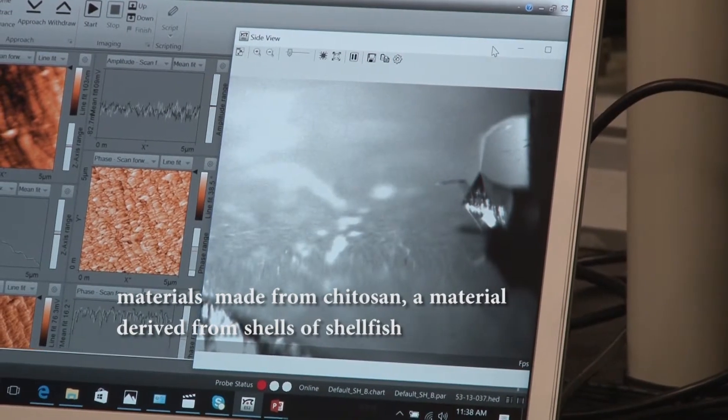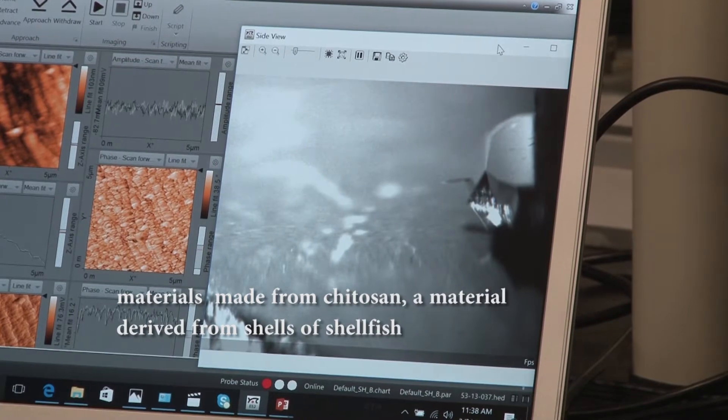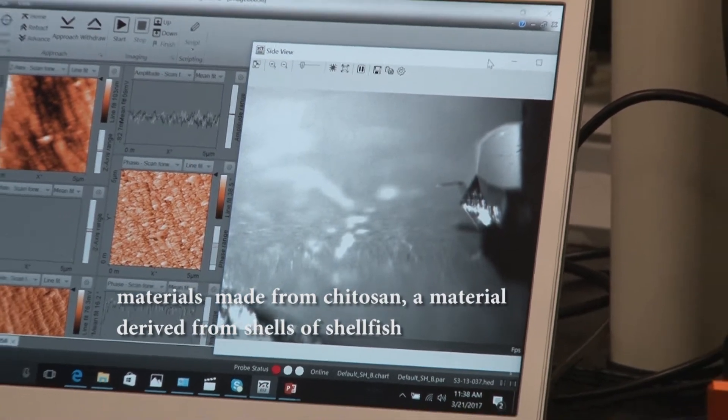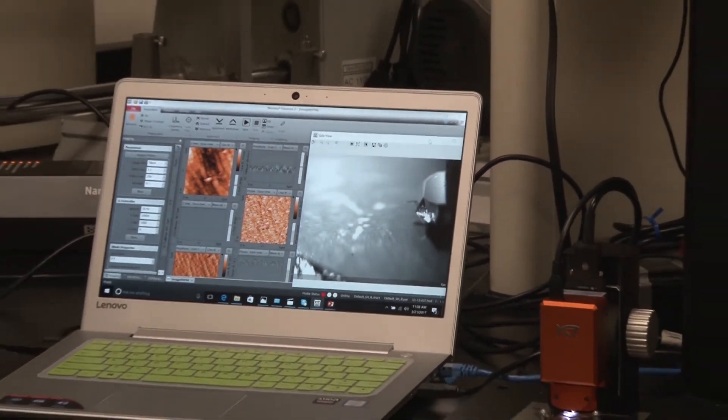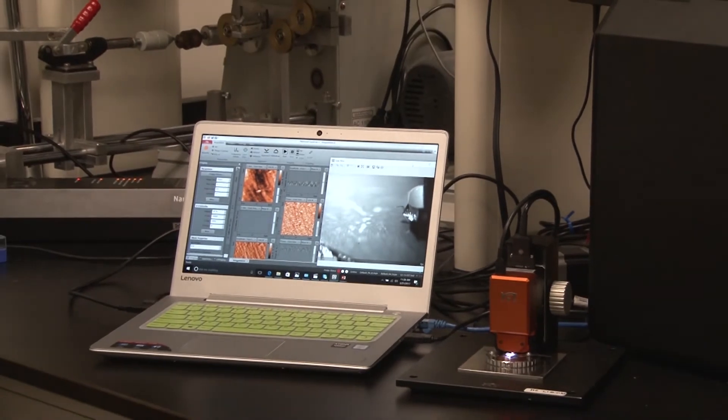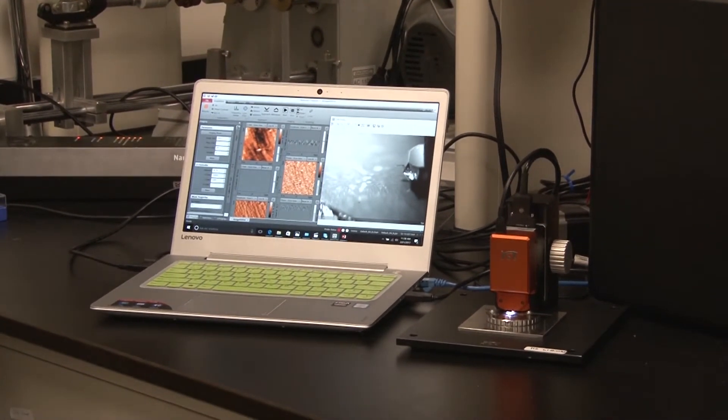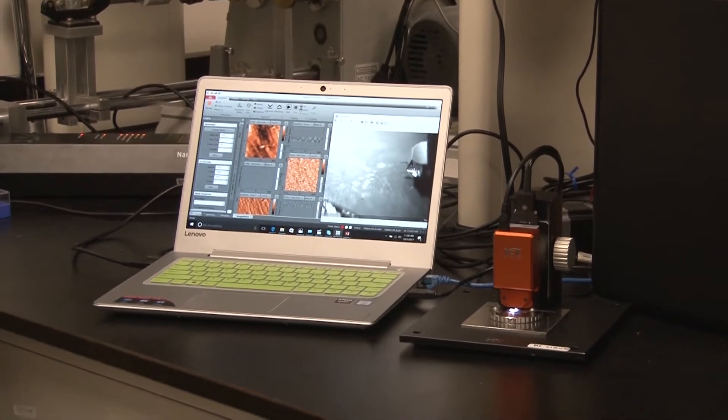The sample we have today is a sensing material that has a polymer known as chitosan. These polymers are used in drug delivery, they've been used in tissue engineering, and this has a lot of engineered properties.